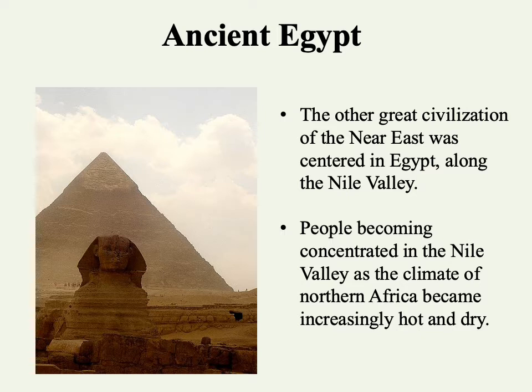Welcome to part two of our first lecture on ancient civilizations. We now turn to developments in ancient Egypt, the other great civilization of the Near East centered along the Nile River Valley. We're going to see similar patterns to what we encountered in Mesopotamia, but there are some important differences in terms of how this civilization first emerged. People started to concentrate in the Nile Valley as the climate of northern Africa became increasingly hot and dry.